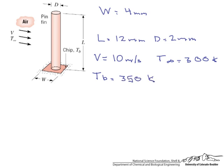What we are going to want to do is, if you notice we are missing the H bar. So the first thing we want to do is find the average convection coefficient, then determine the pin heat transfer rate, and finally the total rate of heat transfer from the chip.